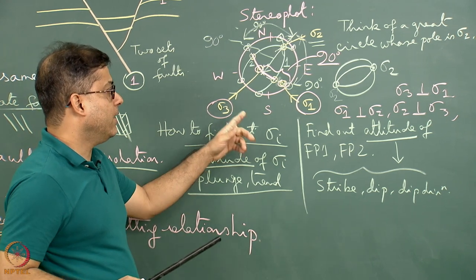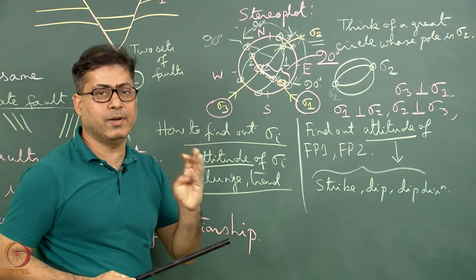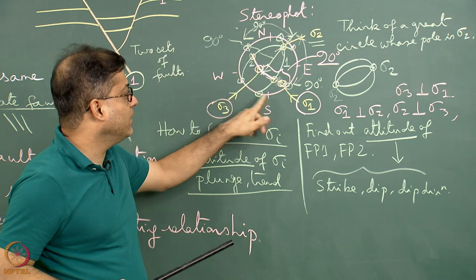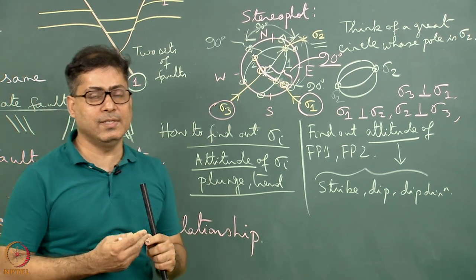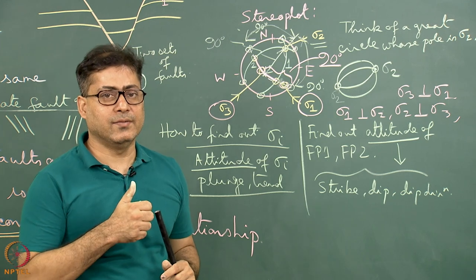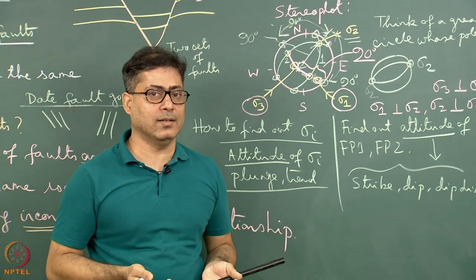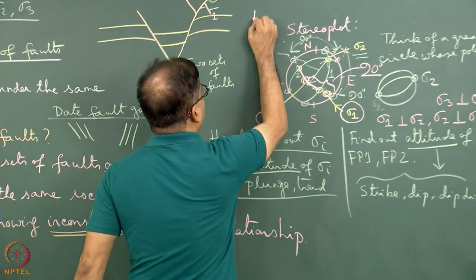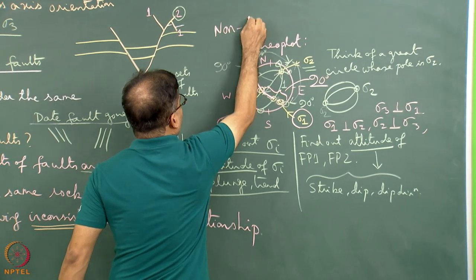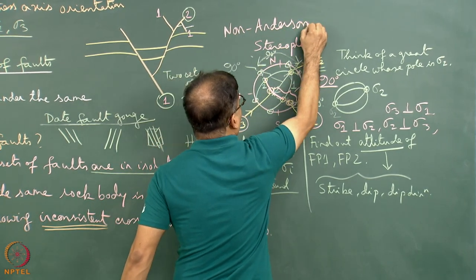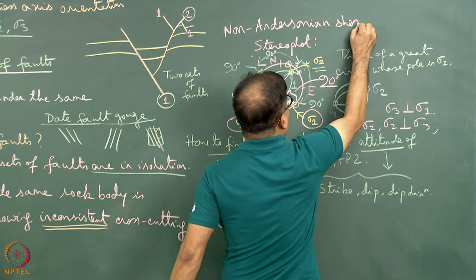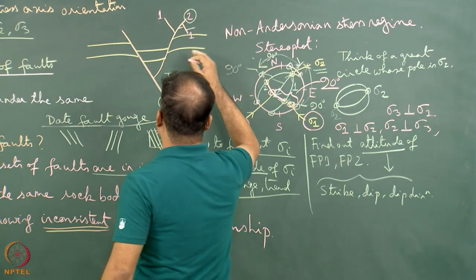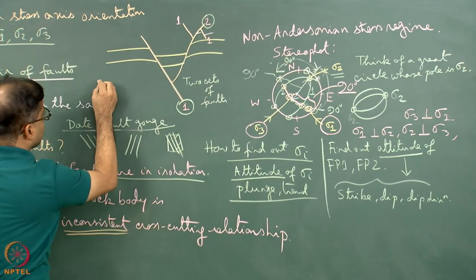In this case, none of sigma 1, sigma 2, or sigma 3 plot at the centre of the stereonet, and none plot on the periphery, indicating that no principal stress axis is vertical and none are horizontal. This means we have dealt with a non-Andersonian stress regime, and accordingly fault 1 and fault 2 can be called non-Andersonian faults.